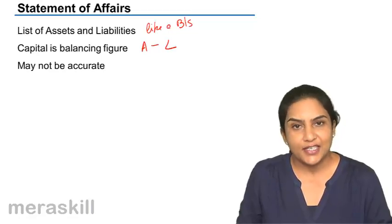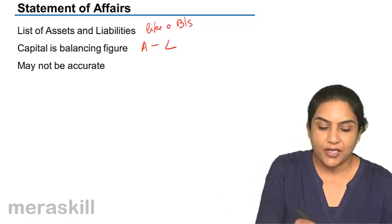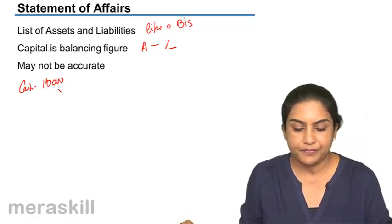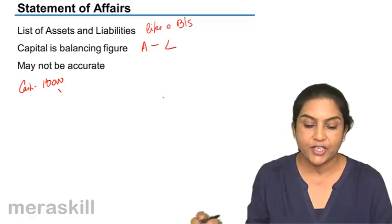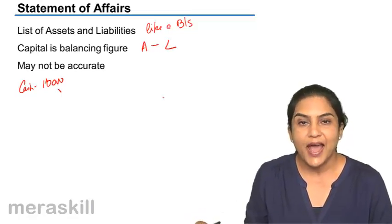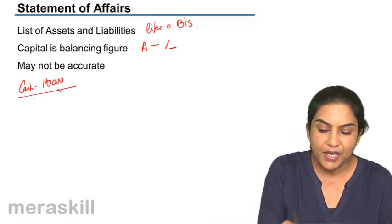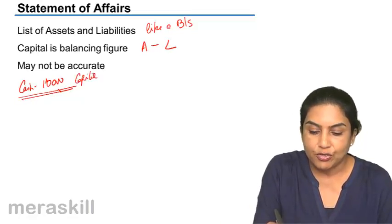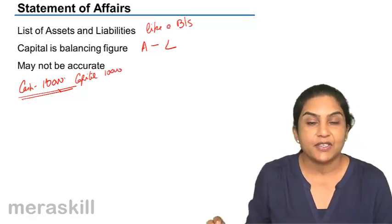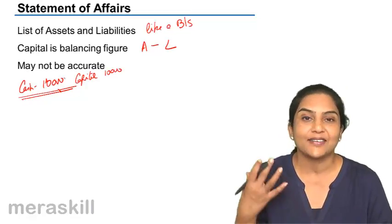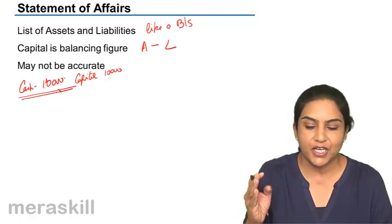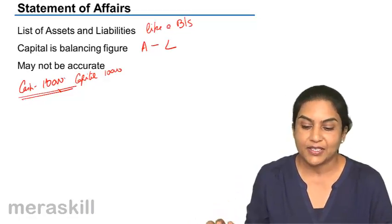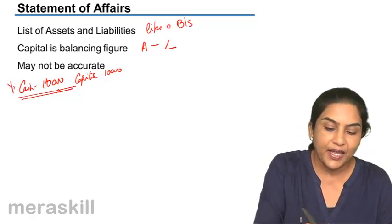Let us consider an example. Suppose I start a business by bringing in cash of rupees 10,000. At the beginning, my asset is cash of 10,000, and therefore capital is also 10,000. That is the net worth of the business on the first day. Cash is 10,000 and capital is 10,000 at the beginning of the year.